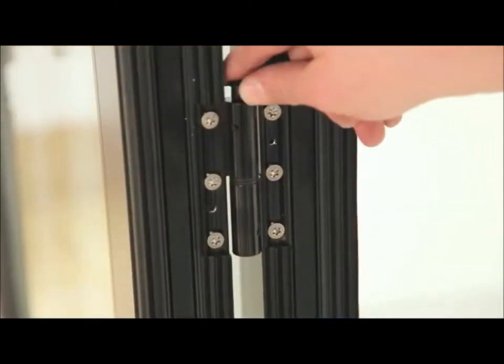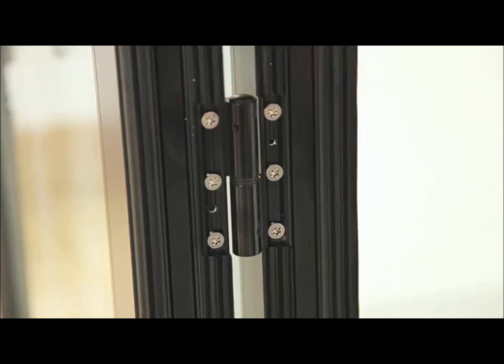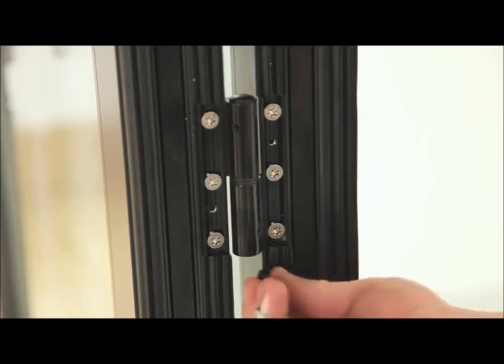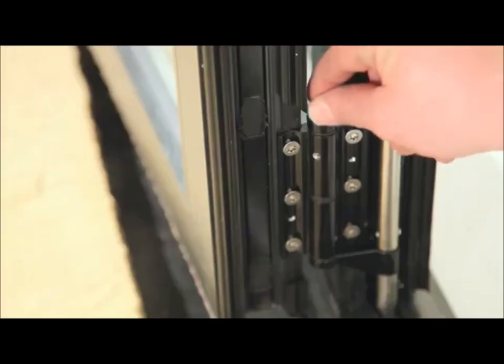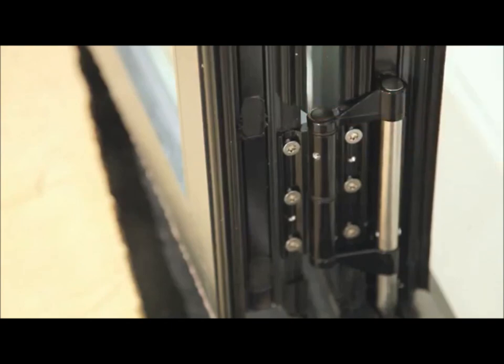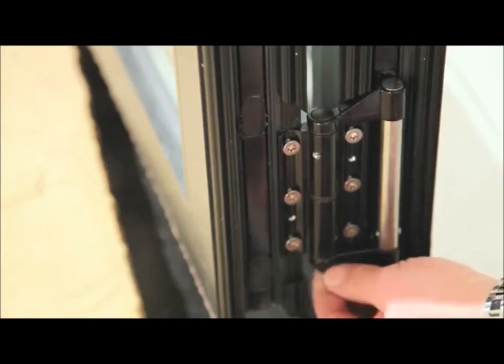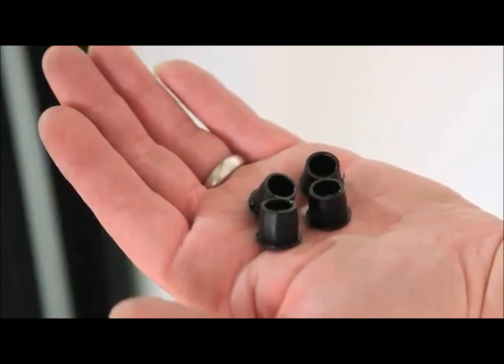Install all the hinge plugs provided into the top and bottom of all the remaining hinges. Insert the screw caps provided into the fork pins on the top and bottom carriage assemblies. Insert the fixing plugs provided into the 13mm holes drilled in the jams.